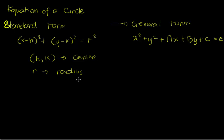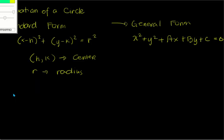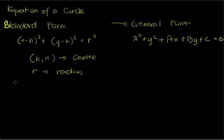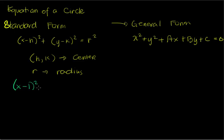Now let's have an actual example of an equation of a circle which is in standard form, and let's convert it into its general form. The example we have is x minus 1 squared plus y minus 3 squared equals 3 squared.